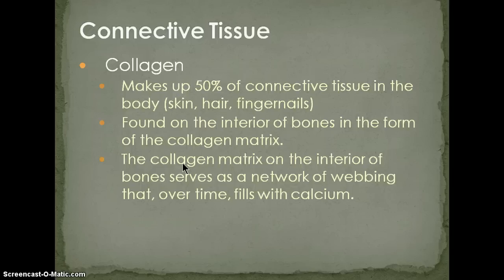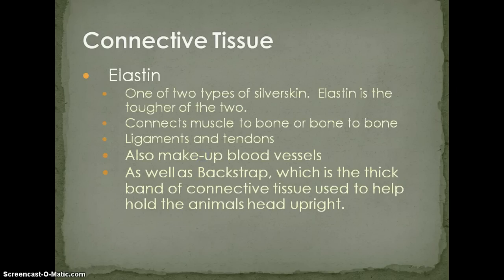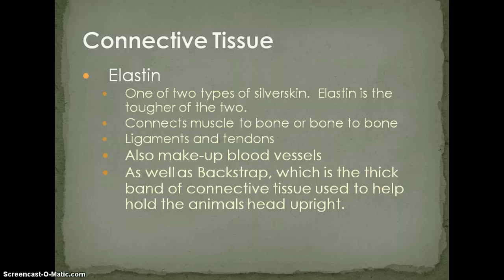Elastin is the second kind of connective tissue — collagen is the first. There are two types of silver skin: heavy-duty and lightweight. Elastin is the heavy-duty type and the toughest of the two. It's what connects bone to bone or muscle to muscle — it's the ligaments and tendons.